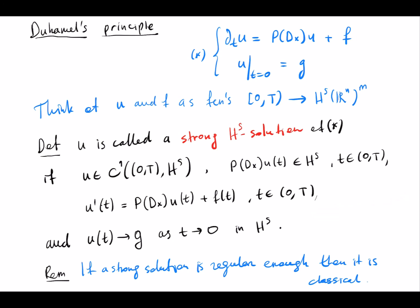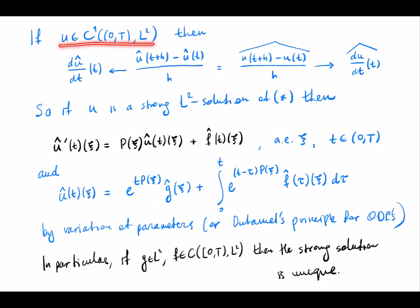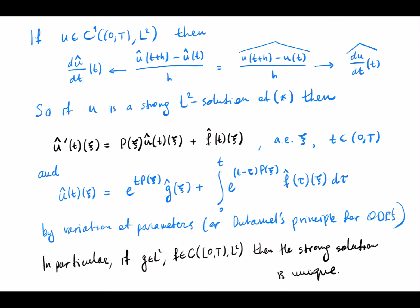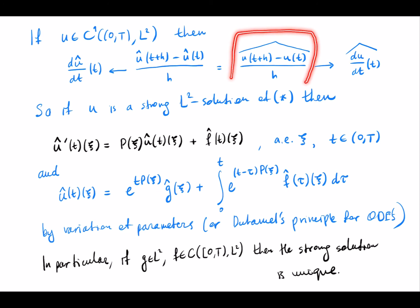If a strong solution is regular enough then it is classical — similar to the strong solution concept for the Laplace equation. If u is C^1, let's take just L^2 instead of H^s and take the time derivative of the Fourier transform of this function. To do that we need to take a difference quotient and take a limit as h goes to zero, which will give the time derivative of the Fourier transform of u. By linearity of the Fourier transform, we can also write it in another way.